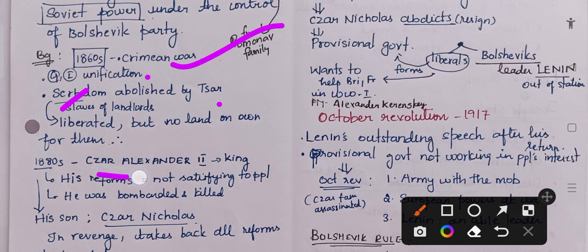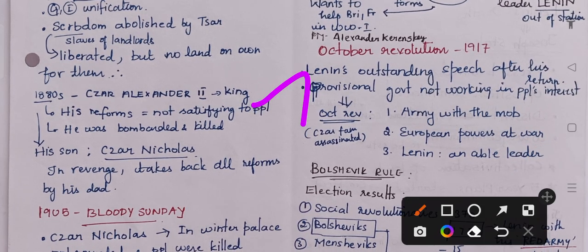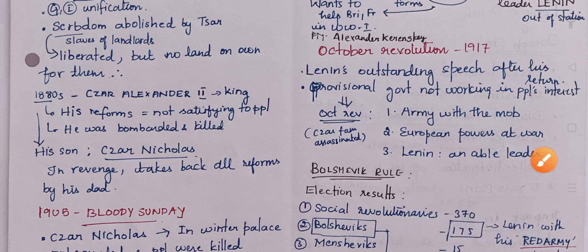In the 1880s, Tsar Alexander II made some reforms which were not satisfying to the people. Then he was bombarded and killed by the people. Then his son, Tsar Nicholas, came. In revenge, he took back all the small reforms done by Tsar Alexander II, so the situation became even worse.